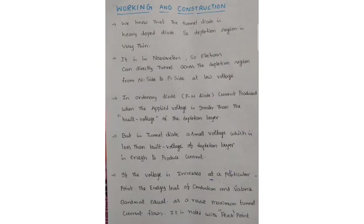Tunneling means direct flow of electrons across the small depletion region from the n-side into the p-side. Coming to working and construction, some important points: the germanium material is commonly used to make this diode.